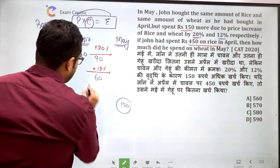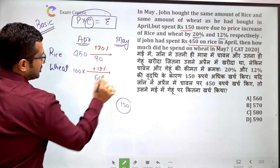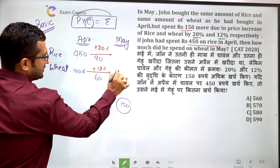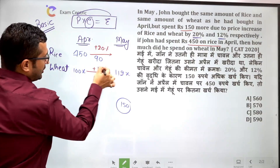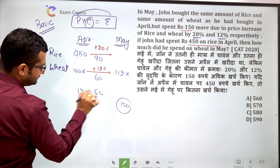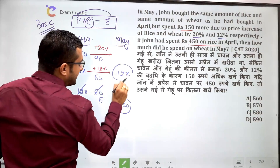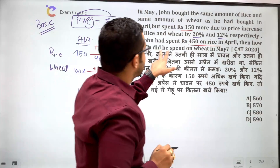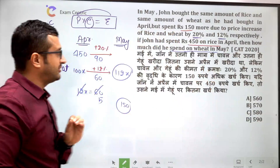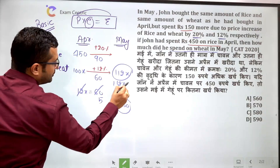अगर wheat की April की initial value को 100x मानें, तो 12% increase होने पर यह 112x हो जाएगी और change = 12x। यह 12x, ₹60 के बराबर है, इसलिए x = 5। तो May में wheat पर खर्चा = 112x = 112 × 5 = ₹560।